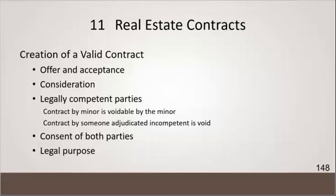When an offer is made, there are three things that can happen to it. The offer is made by the offeror — the offeror is the one that made the offer. More commonly called the buyer. The buyer is the offeror and he makes an offer to the offeree, who is the seller.